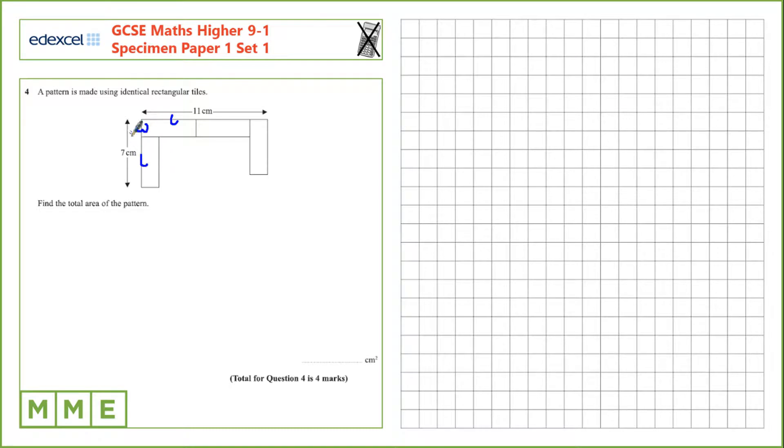So here we can form an equation with L plus W is 7. And we can form another equation here. We've got two lots of L and one lot of W. So 2L plus W is 11.